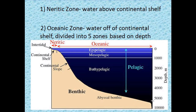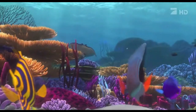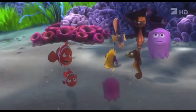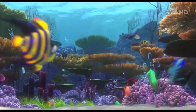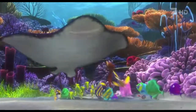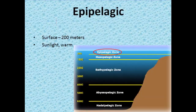The oceanic zone is divided into five zones based on depth. The zones are: epipelagic, mesopelagic, bathyo, and bisipelagic — all the rest are too deep for you and me to see. The epipelagic layer is the first 200 meters into the ocean; sunlight can still penetrate so the water is warm.